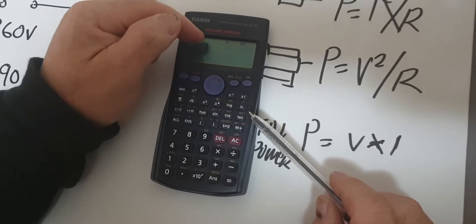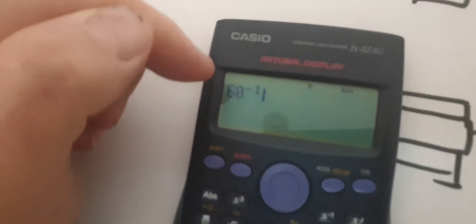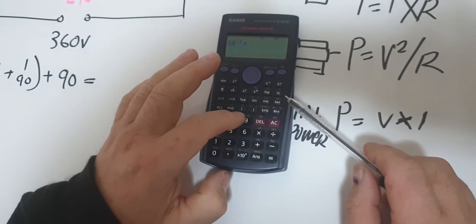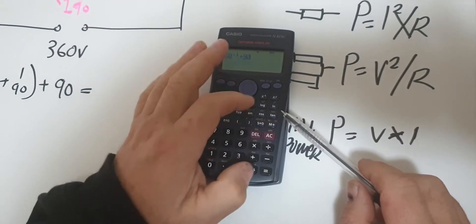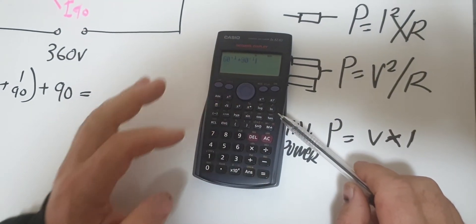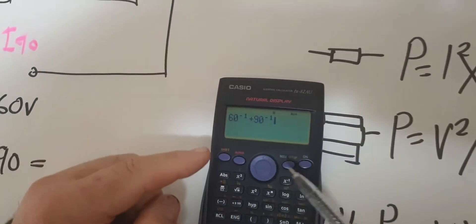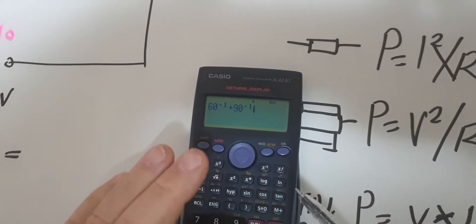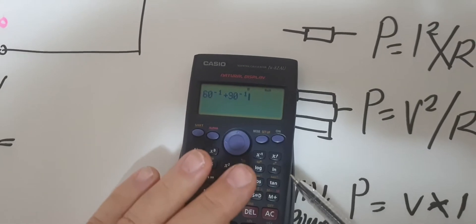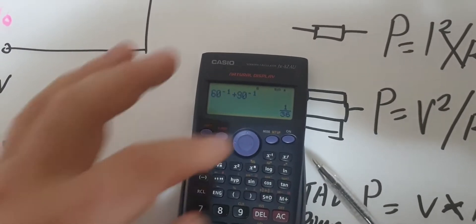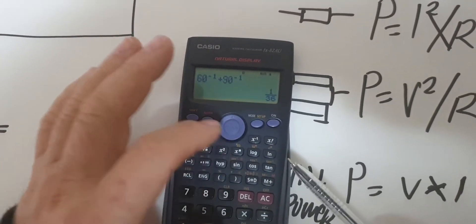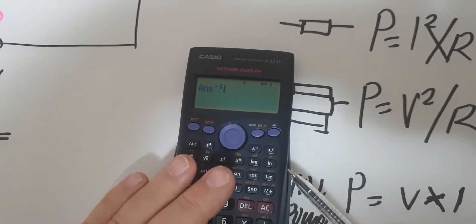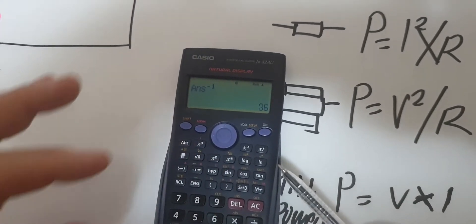You can see it gives 1 over 60. Then I add 90 and press x⁻¹ again, so now I have 1 over 60 plus 1 over 90. I push the equals button and get the reciprocal answer, then press x⁻¹ once more to convert it back and push equals.